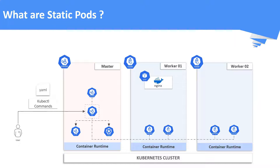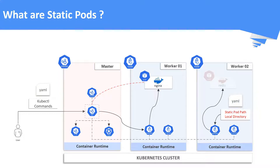Whenever you create a normal pod using kubectl commands or with the help of YAML definition files, the request is first sent to the kube-apiserver. The kube-apiserver instructs the kubelet to create a pod. This normal pod is then supervised by the API server for any changes, along with the kubelet daemon. Whereas static pods, on the other hand, are handled directly by the kubelet and are not in control of the kube-apiserver. The kubelet is responsible for creating and managing these pods once the pod YAML definition file is given to it, without the intervention of the kube-apiserver.